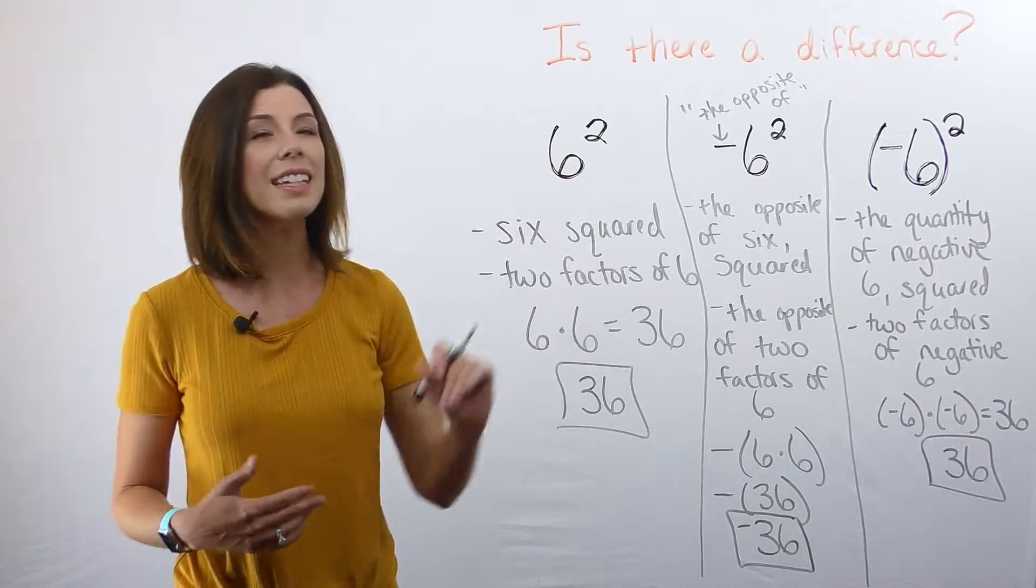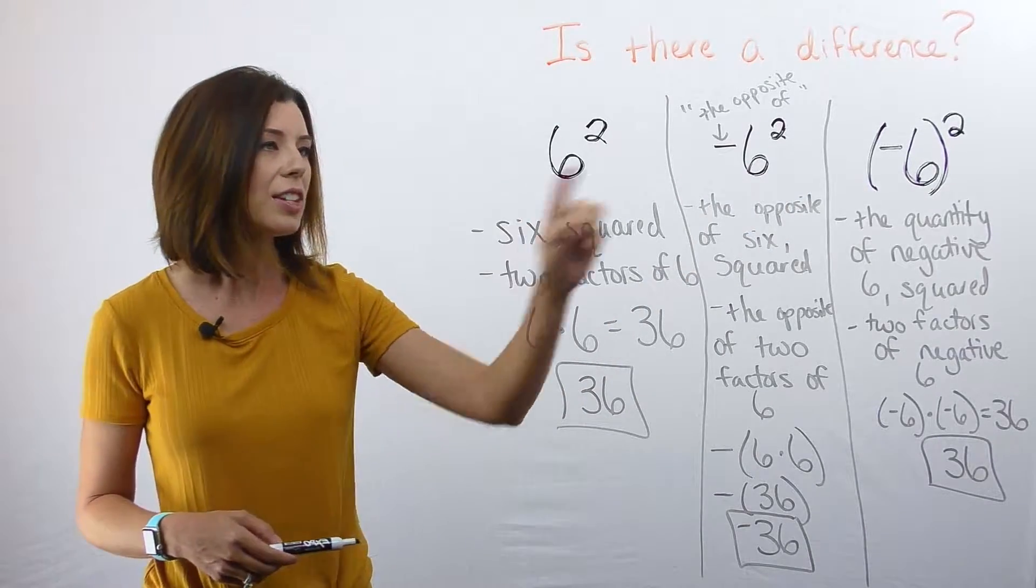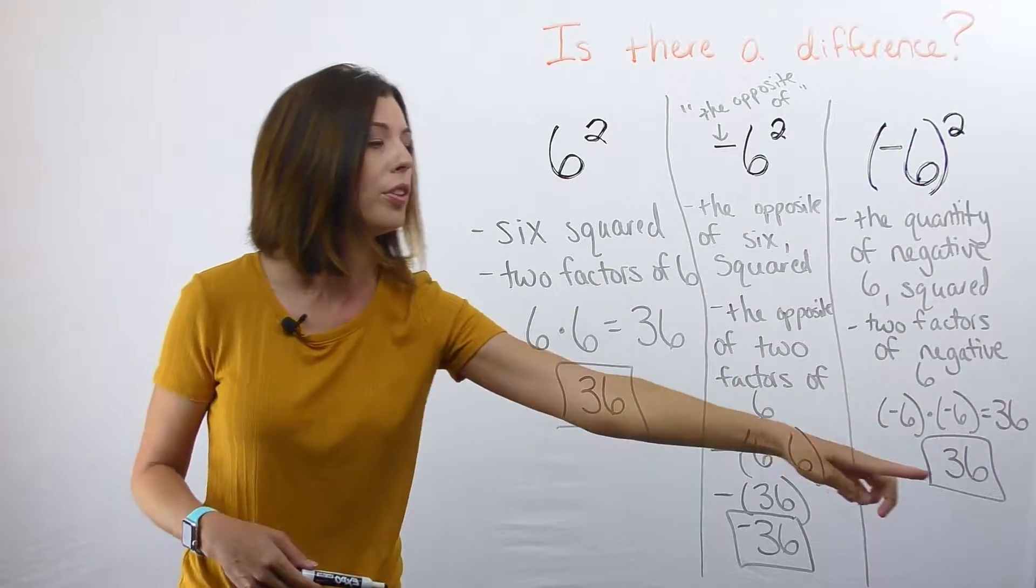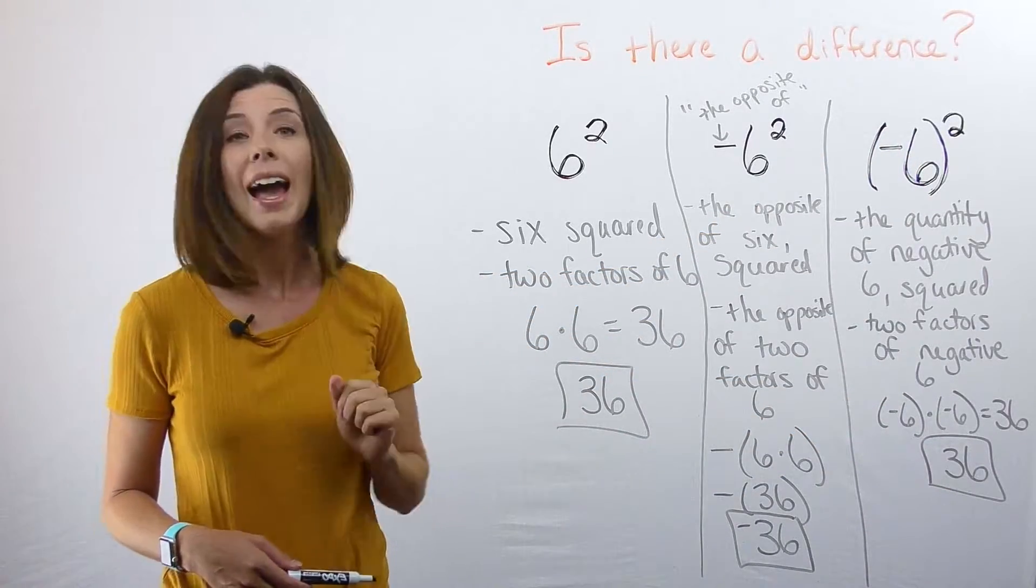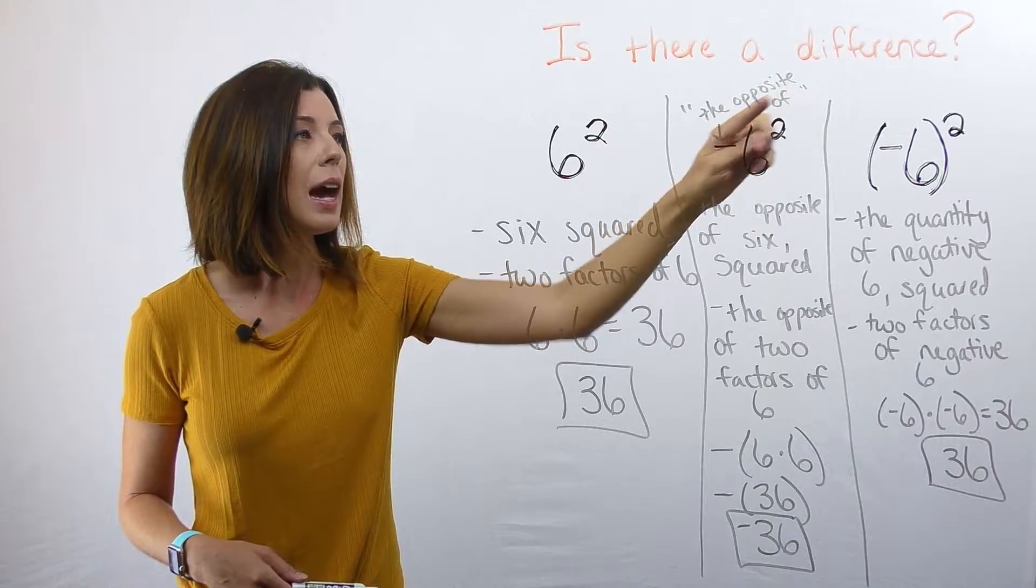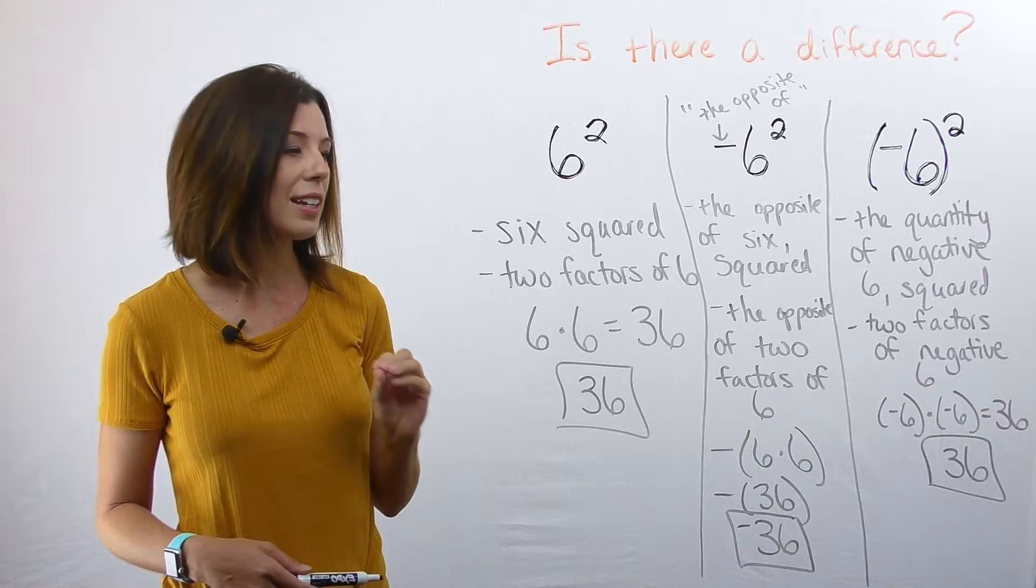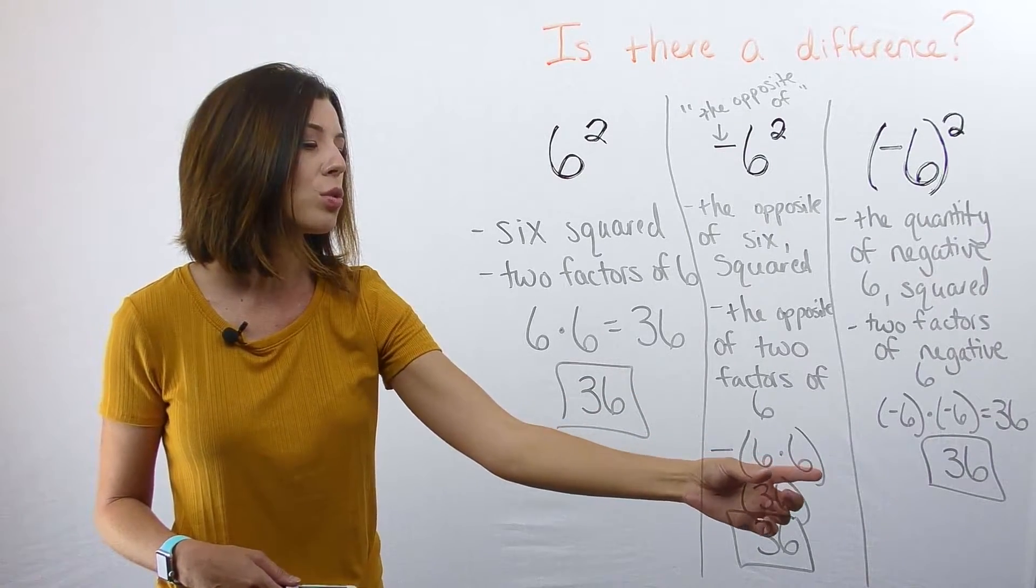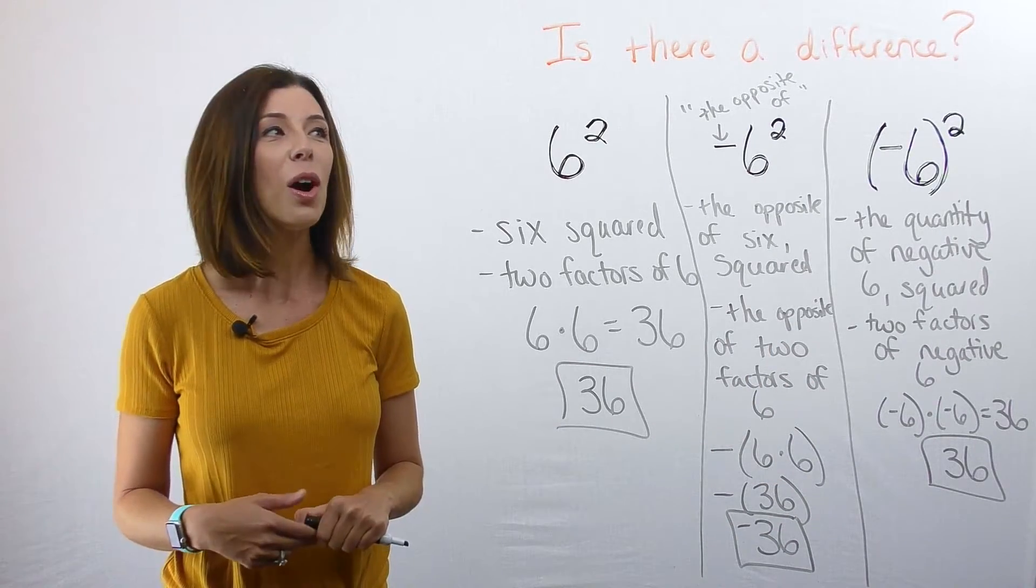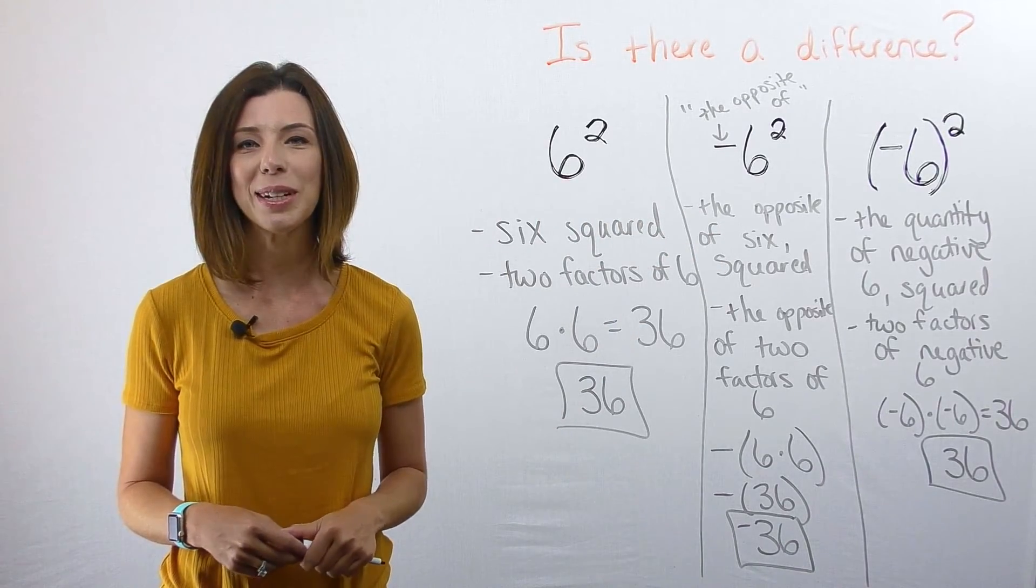So when looking at this, is there a difference between these three expressions? There definitely is. As you can see, 6² and the quantity of negative six squared both give us a positive 36. However, this guy right here, which we're going to read as the opposite of six squared, is going to give us a different answer because I'm going to have to think about squaring this number before I put that opposite back in. Hopefully that gives you a little bit of clarity on how to deal with these three expressions.